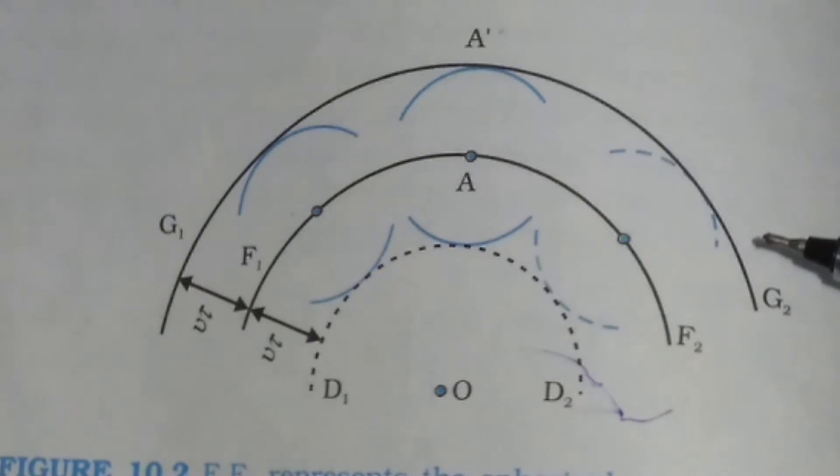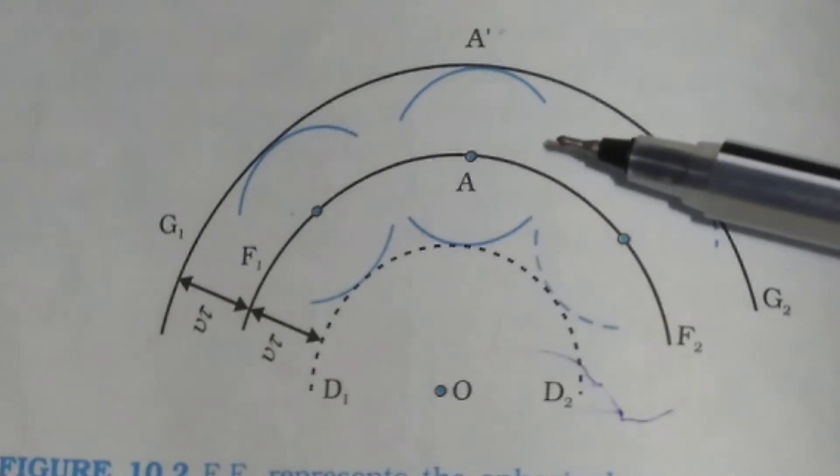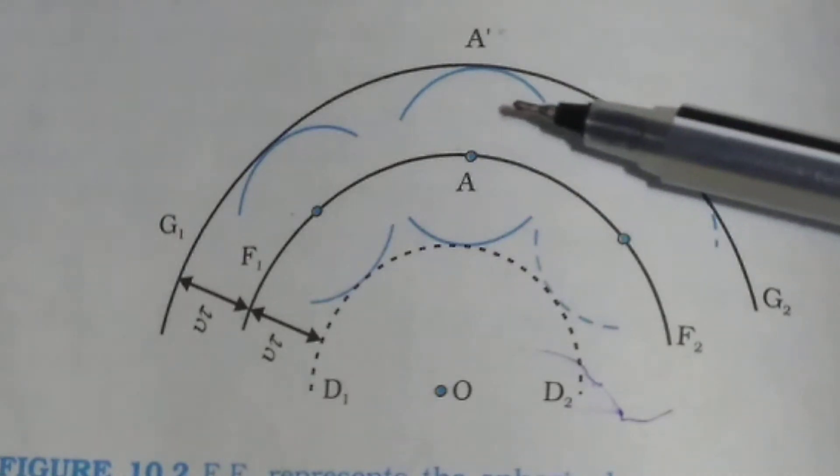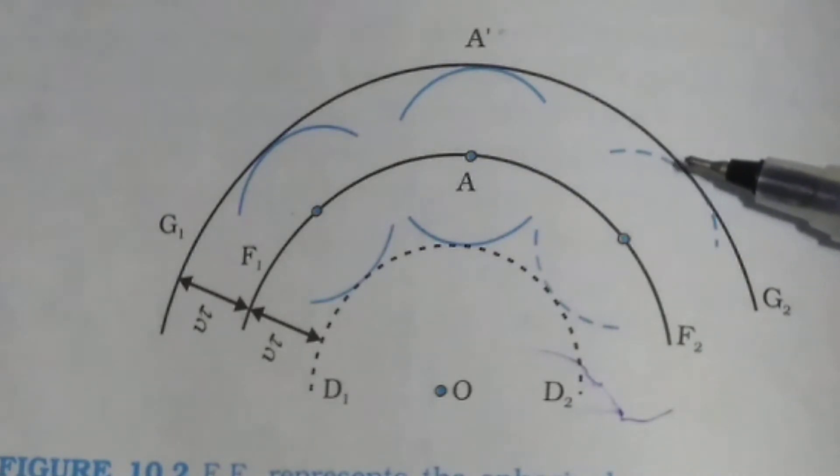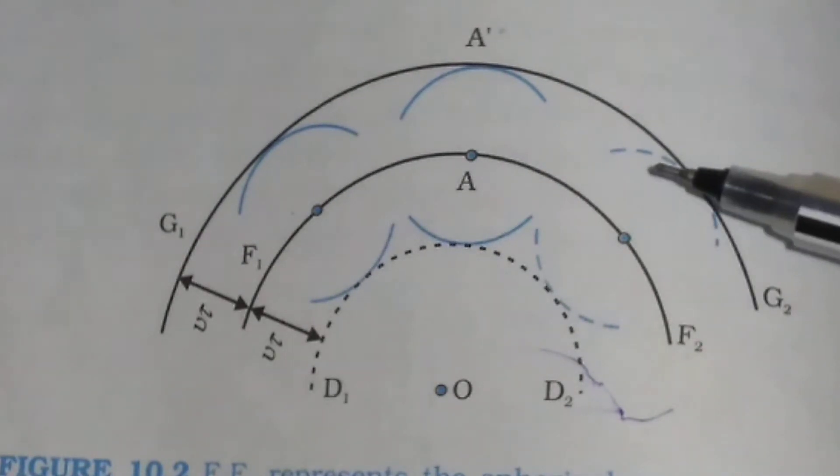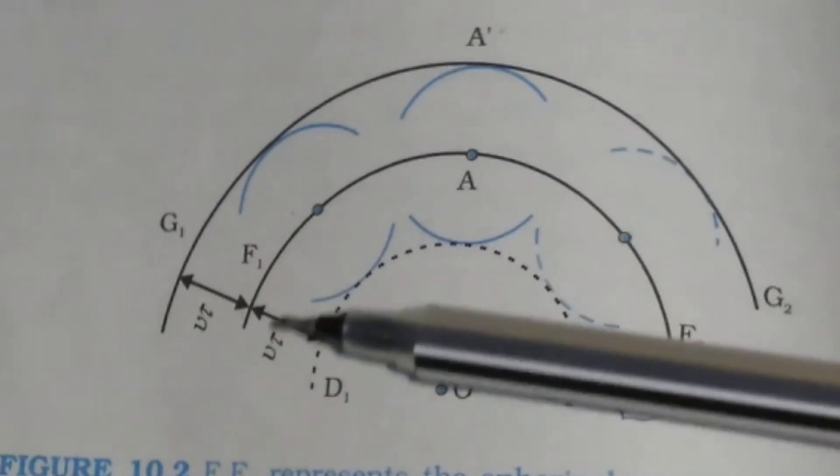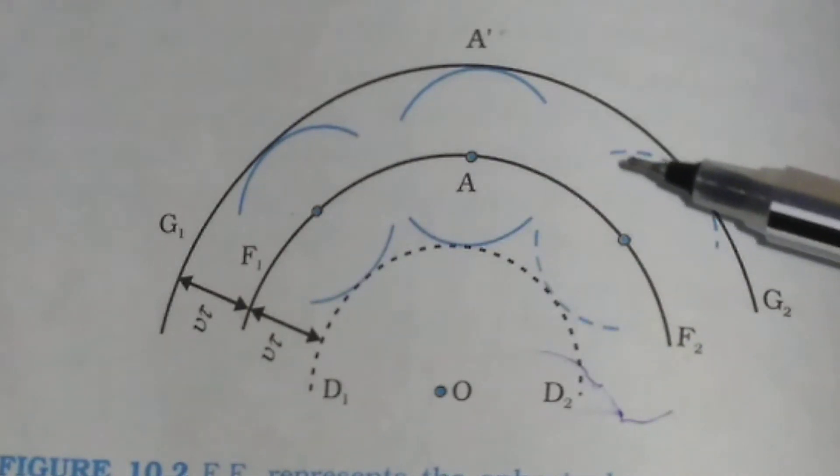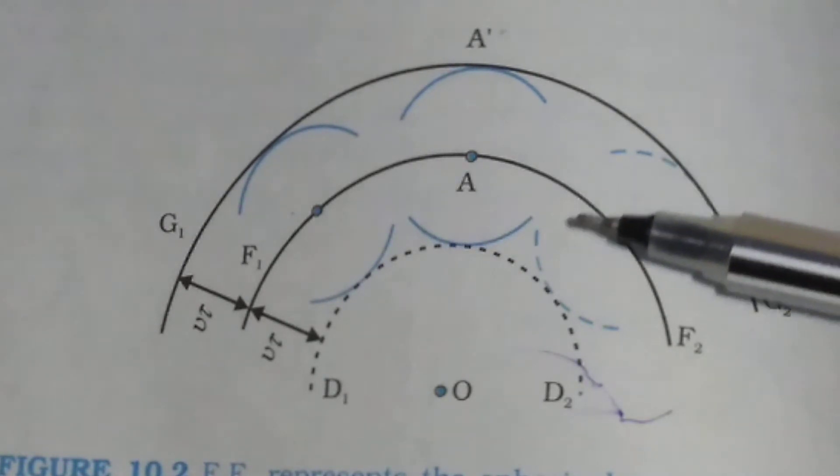That is the G1, G2. So the new wavefront G1, G2 is called the secondary wavefront. And the new wavefront G1, G2 is again spherical with point O as the center.